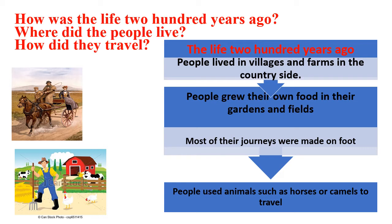The life 200 years ago: people lived in villages and farms in the countryside. People grew their food in their gardens and fields. Most of their journeys were made on foot. People also used horses and camels to travel.